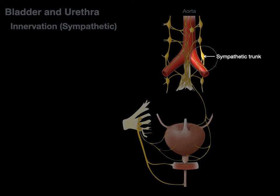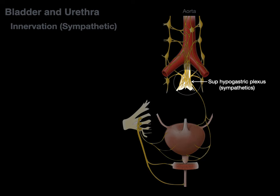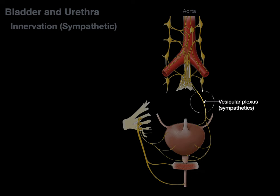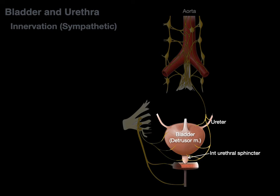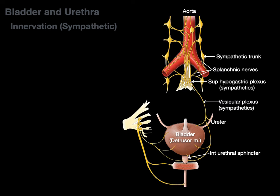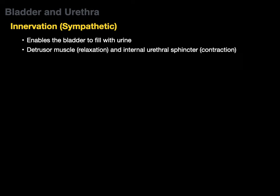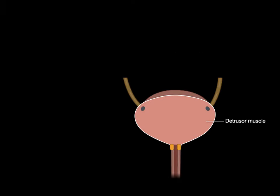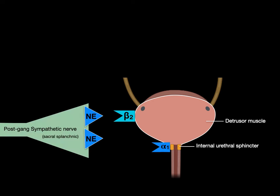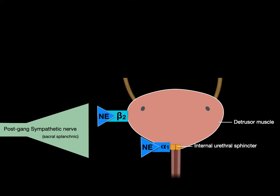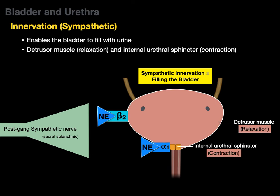The sympathetic innervation of the bladder travels through the sympathetic trunk and splanchnic nerves to the superior hypogastric plexus, then through the vesicular plexus to the bladder and internal urethral sphincter — both smooth muscle. Sympathetics enable the bladder to fill: norepinephrine binds beta-2 receptors on the detrusor causing relaxation, and alpha-1 receptors on the internal urethral sphincter causing contraction. This allows urine to fill the bladder.